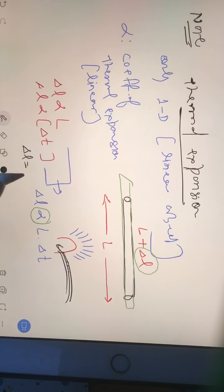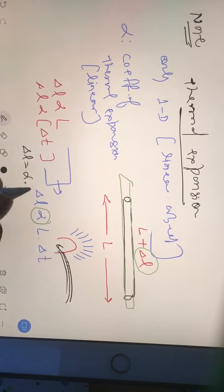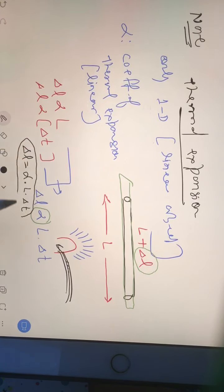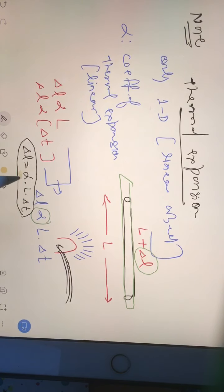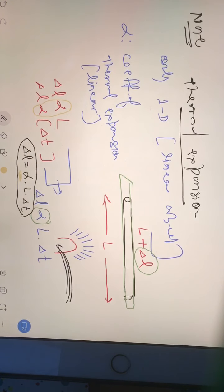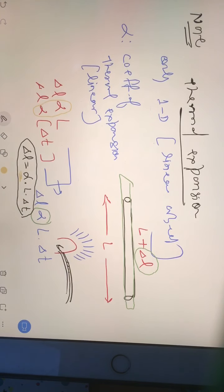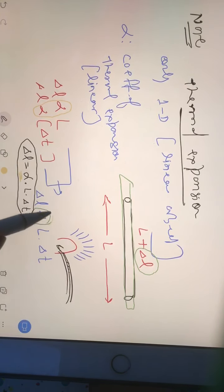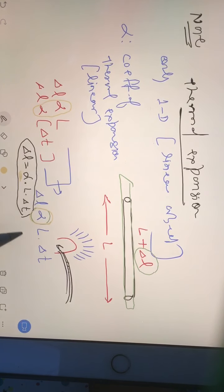del_l equals alpha into L into del_T. Now in this, don't be confused - this alpha what you are seeing here and this proportional sign are different. Proportional sign is different and alpha is different. Don't be confused - here we have proportional sign, alpha is coming in the last.